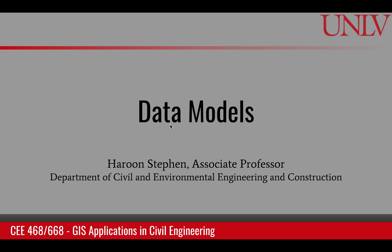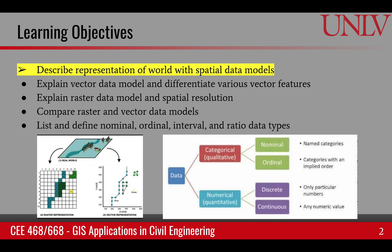This module is about data models. The learning objectives are to describe a representation of the world with spatial data models. Two types of spatial data models will be covered: the vector data model and the raster data model. We'll compare the two for their advantages and disadvantages, and finally learn about the four data types used in describing attributes of spatial data.